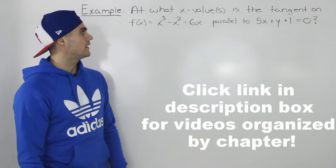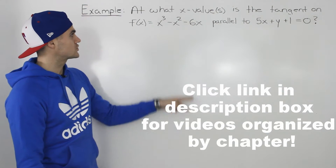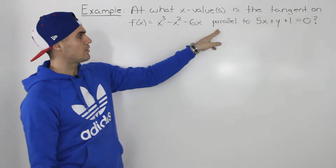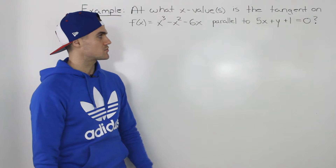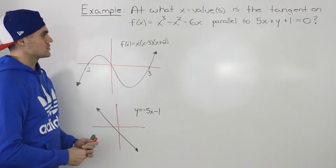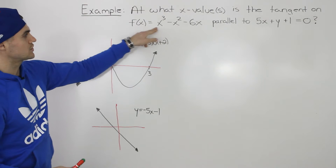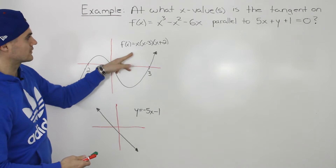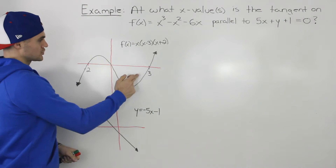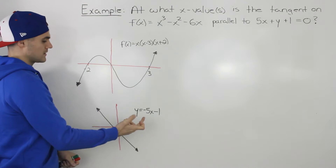Moving on to the next example: at what x values is the tangent on the function x³ - x² - 6x parallel to the line 5x + y + 1 = 0? You can factor the cubic into x-intercepts of negative 2, 0, and 3.